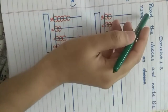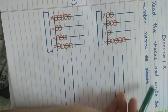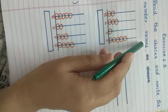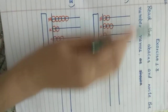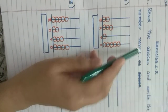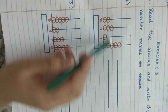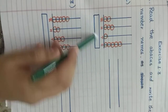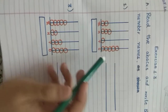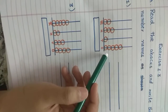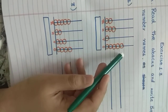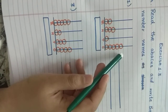Question A: Read the abacus and write the number names. So we have to read the abacus, write the number and the number name. Always start with 1s and count the number of beads shown on the abacus.